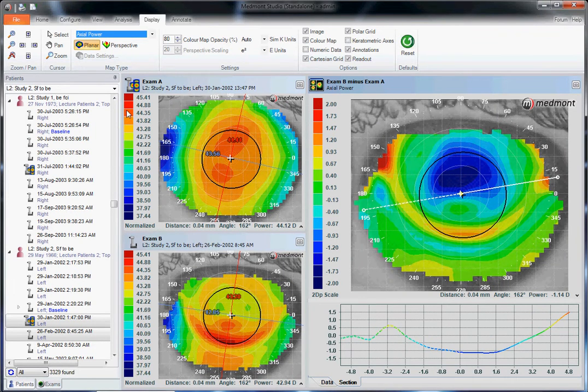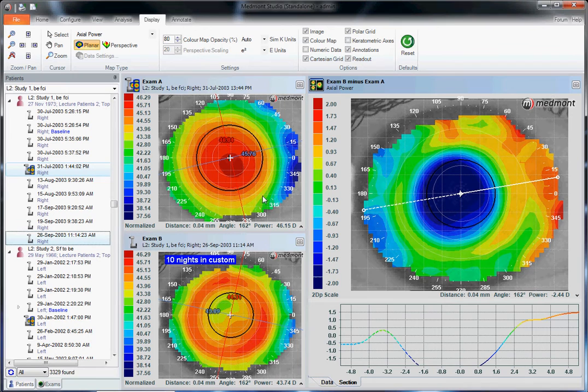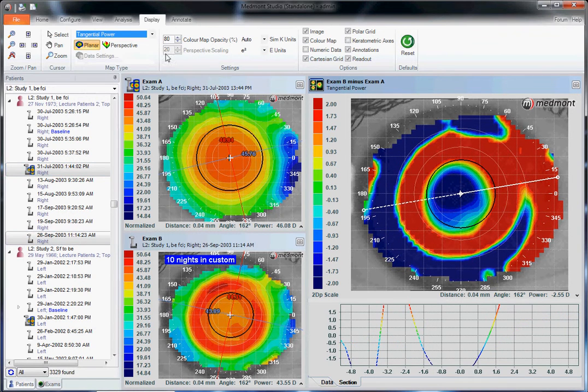So the subtractive map can be used in orthokeratology to understand many things about the treatment. We understand the Rx change on the axial map by clicking our cursor in the center. We can see the position of the treatment zone and the size of the treatment zone. We can switch over to the tangential map and look at the position of the lens in relationship with our pupil with these red and blue rings.